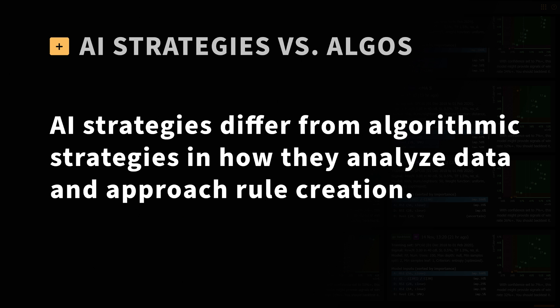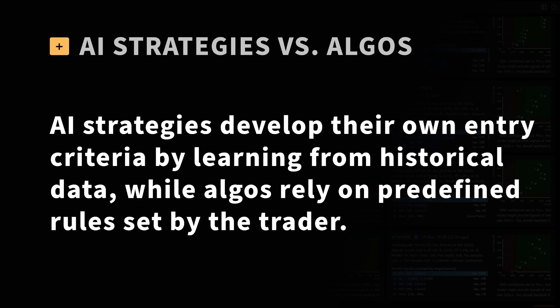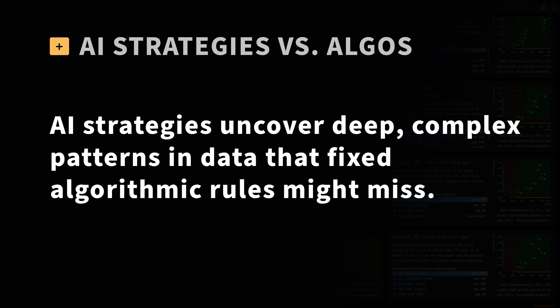How are AI strategies different from algorithmic strategies? AI strategies differ from algorithmic strategies in how they analyze data and approach rule creation, and they offer a range of advantages for traders of all skill levels. Learning-based vs. rule-based: AI strategies develop their own entry criteria by learning from historical data, while algorithmic strategies rely on predefined rules set by the trader. AI strategies also uncover deep, complex patterns in data that fixed algorithmic rules might miss, detecting relationships not easily captured by rule-based approaches.